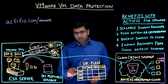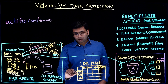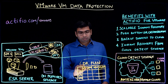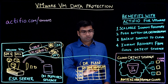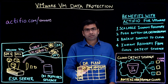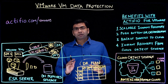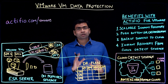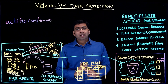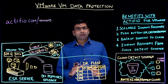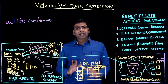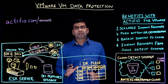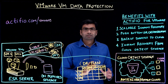You can specify the order of VMs, the compute, the memory, the network, the VLAN, the IP address — everything that you want to associate with the recovered virtual machines. And in just one click, your entire VMware farm of thousands of VMs can be recovered to a DR site.